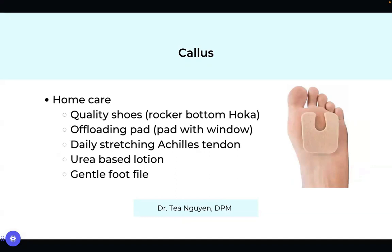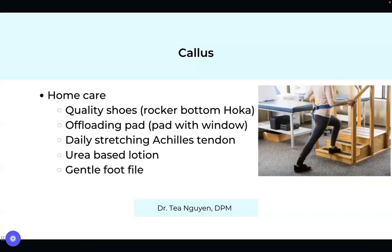Treatment options for a callus leading to foot pain include making sure you have a quality shoe with some cushion, something like a Hoka shoe. You can also use an offloading pad — I call this a U-pad or horseshoe pad. It has a window where it protects the area that has pain. When you walk and put your foot down, the pressure is distributed around the pad and offloads the callused area. You can also do daily stretching of your Achilles tendon — alternate the back leg to stretch it out, or drop one heel off a step.